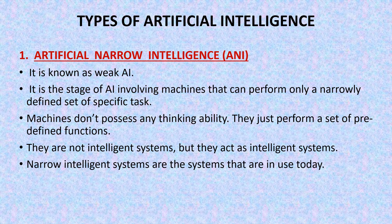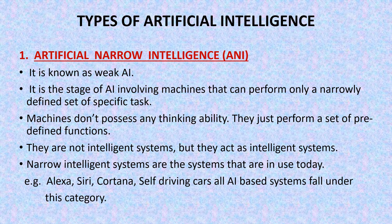Narrow intelligence systems are the systems that are in use today. In today's world, whatever applications of AI we are using, all are based on artificial narrow intelligence. For example, Alexa, Siri, Cortana, and self-driving cars are all based on artificial narrow intelligence. Because these applications can work only after giving proper algorithm, programming or data — they cannot work by themselves. That's why all applications of AI in today's world, not even a single one excluded, are based on artificial narrow intelligence.